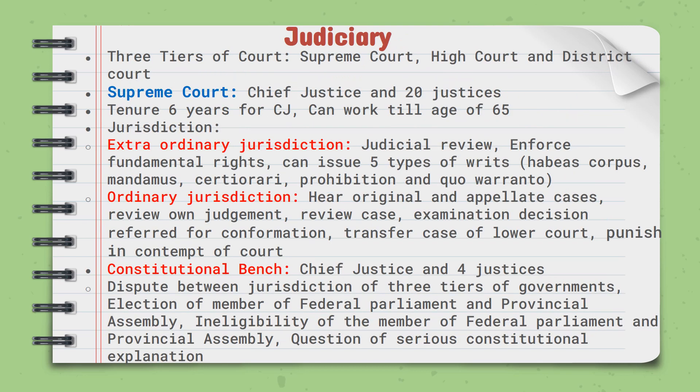Let's talk about the judiciary. Our judiciary does not have a federal structure — it is a unitary system. However, there are still three tiers of court: the Supreme Court as the apex court, the High Court, and the District Court. In the Supreme Court, there is a Chief Justice and twenty other justices. The jurisdiction of the Supreme Court includes the power of judicial review, enforcement of fundamental rights, and the power to issue five types of writs.